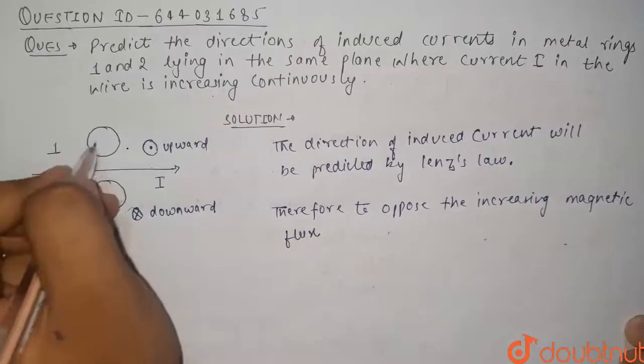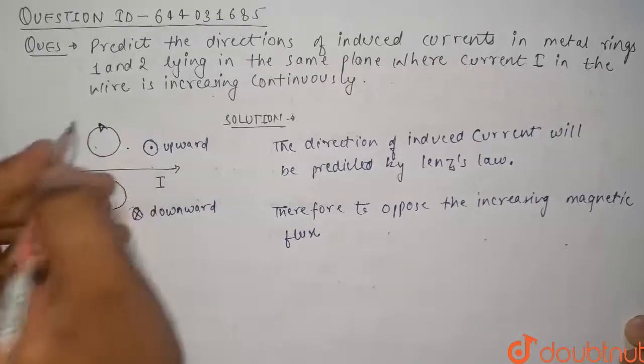To oppose the increasing magnetic flux, the current flowing in this will be in clockwise direction so that the magnetic field due to this current will be in upward direction.